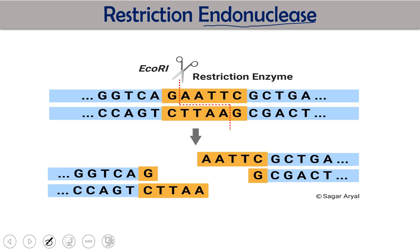When talking about restriction endonucleases, there are two specific things: one is the recognition site and the second is the restriction site. Every restriction endonuclease recognizes some portion of your DNA. This recognition site is normally four to eight base pairs long. For EcoRI, this six base pair long sequence is called the recognition site, and the restriction site is between G and A, so it cuts the DNA from there.